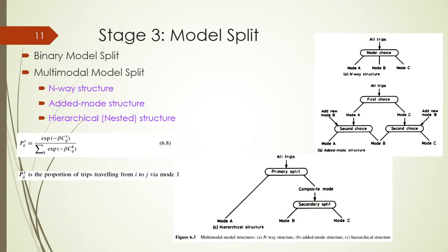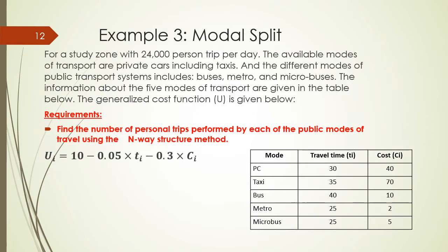Example number three in this tutorial talks about the modal split, which was also discussed in tutorial number five. In modal split, we have a number of trips to distribute over different transport modes using models such as the n-way or added mode structure or the hierarchical structure. An equation is used to calculate the proportion of trips done by each mode. In this example, we are given a number of trips to distribute over five transport modes using the n-way structure method, with trips evenly distributed using the utility function: U = 10 − 0.05 × time − 0.3 × cost, and we have the travel time and cost for each transport mode.